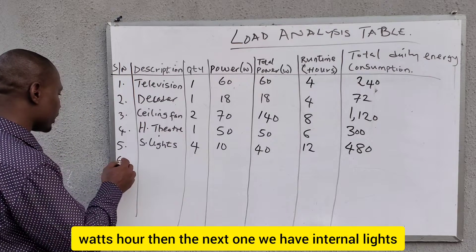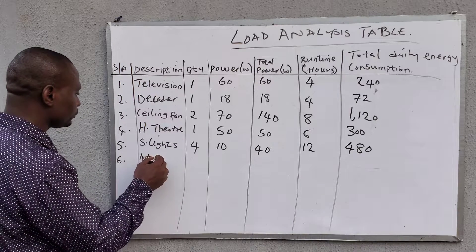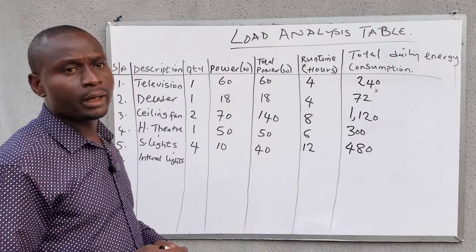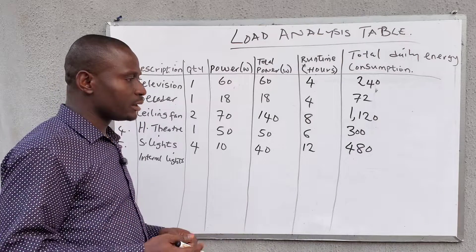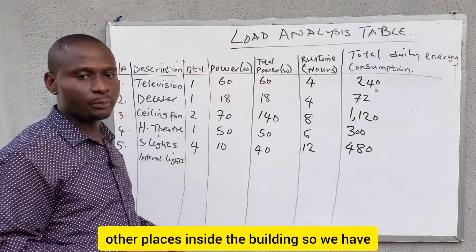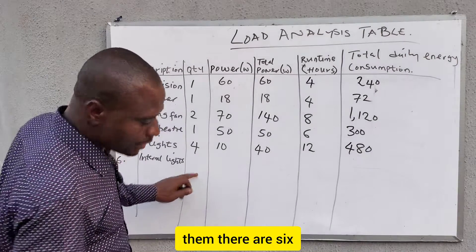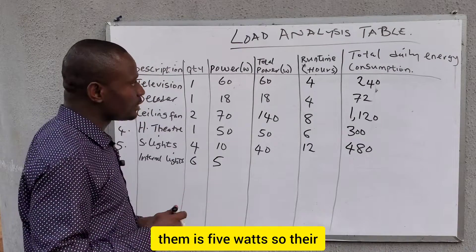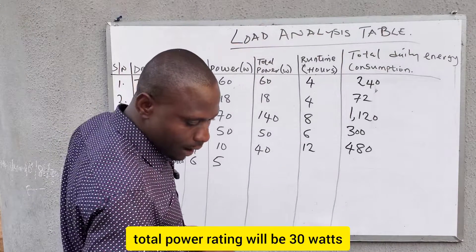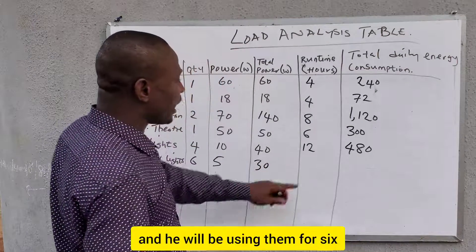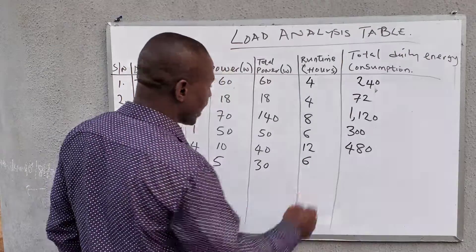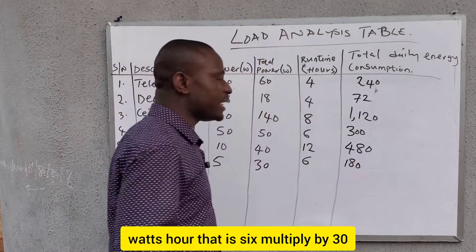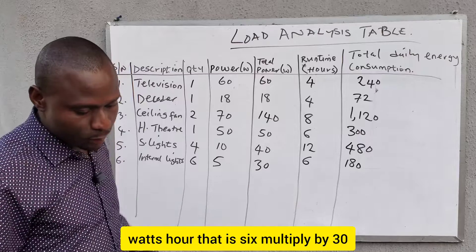Number six is internal lights — that is lights in the sitting room, parlor, toilet, rooms, and other places inside the building. There are six of them, each with a power rating of 5 watts, giving a total power of 30 watts. The client will use them for six hours, so the total daily energy consumption is six times 30, which is 180 watt-hours.